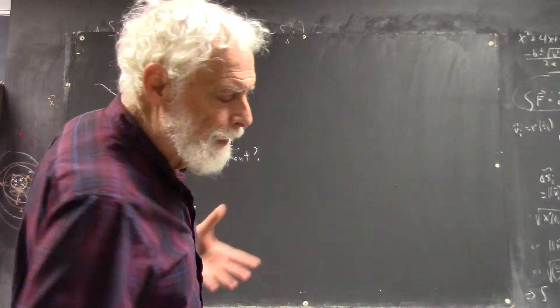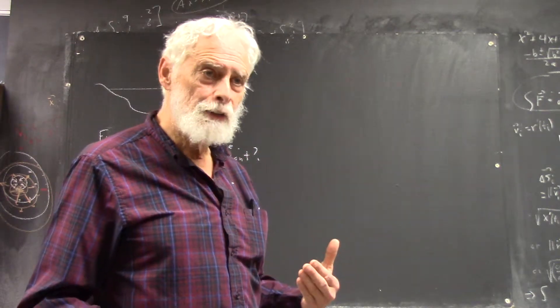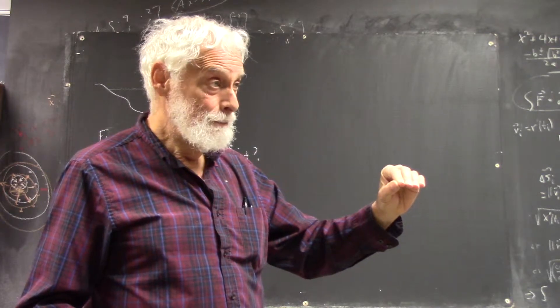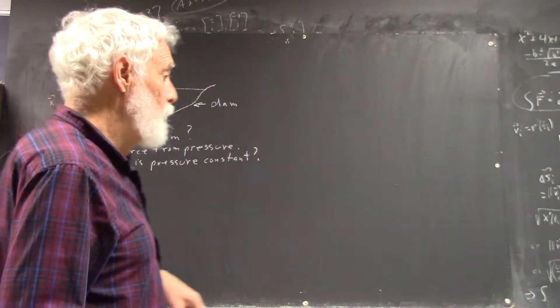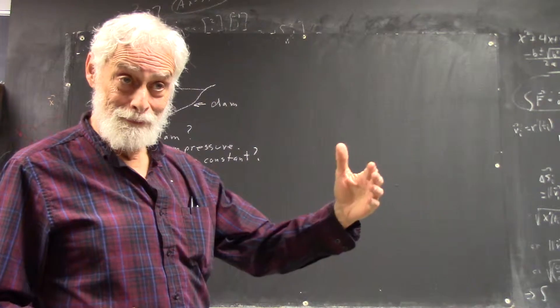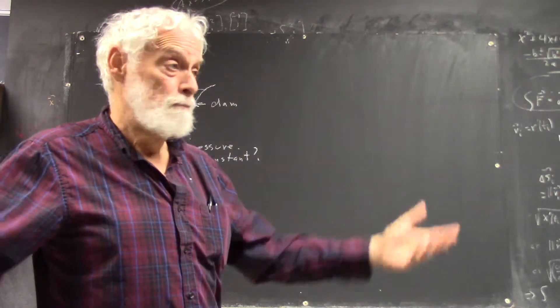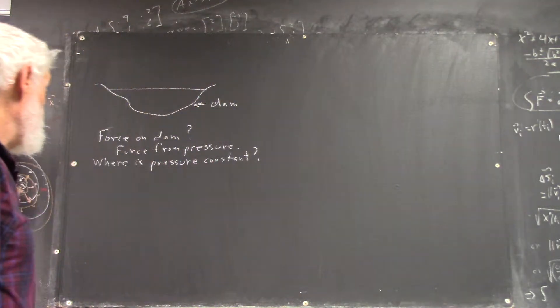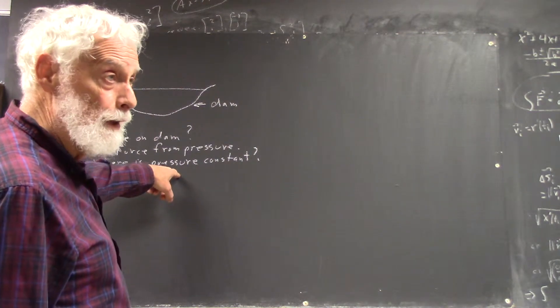Like in the example we just did, the potential difference is constant for given charge. So we partition the charge on the capacitor between zero and whatever the maximum charge is if you want to get the potential energy stored in the capacitor. Here, we're asking where is the pressure constant. In this case, there's a geometric answer.